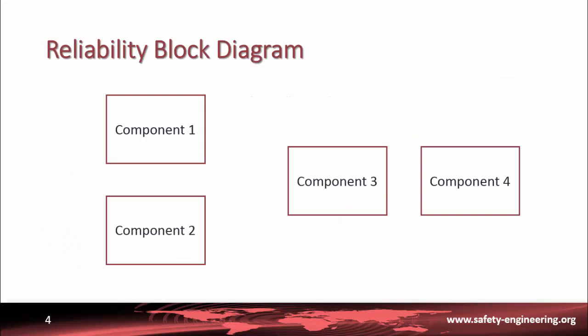A reliability block diagram is a method that uses blocks for representing different components and showing how their reliability contributes to the success or failure of a complex system. These blocks can be connected in a parallel or series configuration.